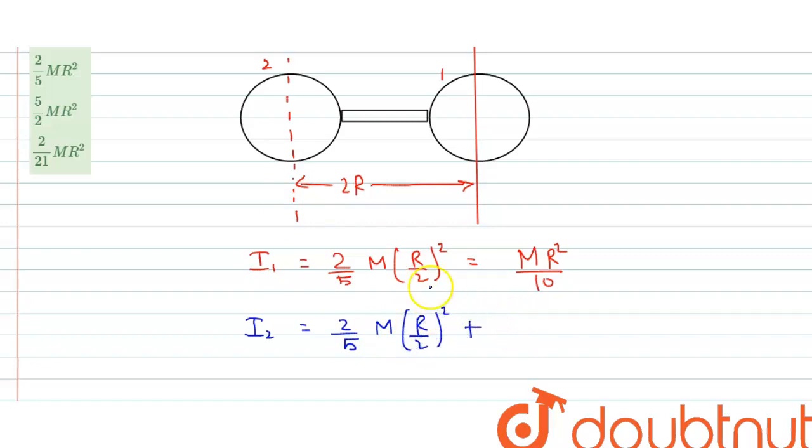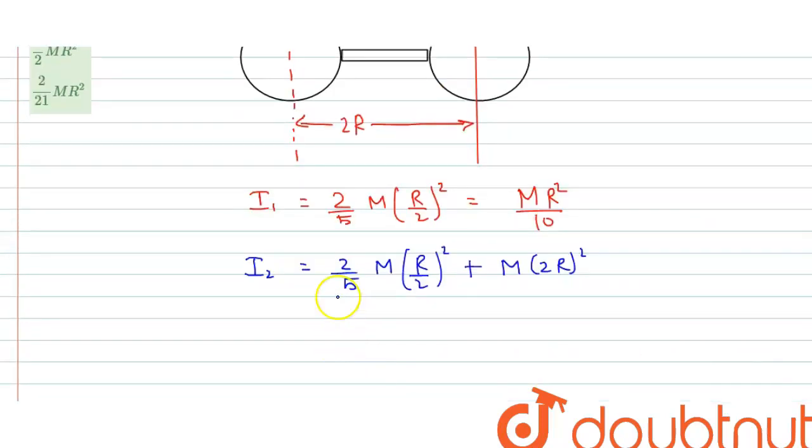This equals mr²/10 plus 4mr², which gives us 41mr²/10.